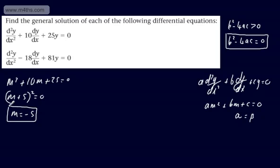We now have two solutions to the differential equation: y = axe^(-5x) + be^(-5x).